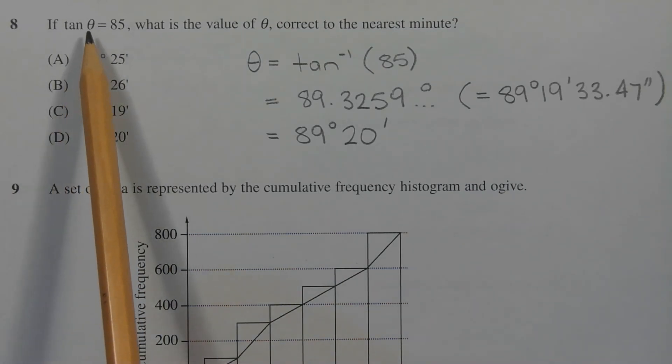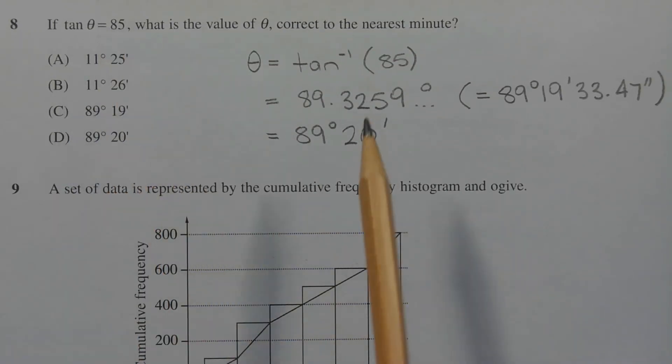So we need to make theta the subject. And we do that by taking the inverse tan of 85. So theta is equal to inverse tan of 85. And we get that by pressing shift tan on your calculator.